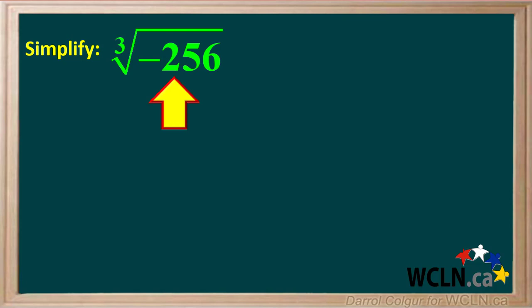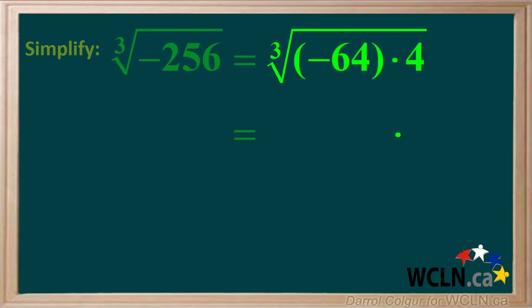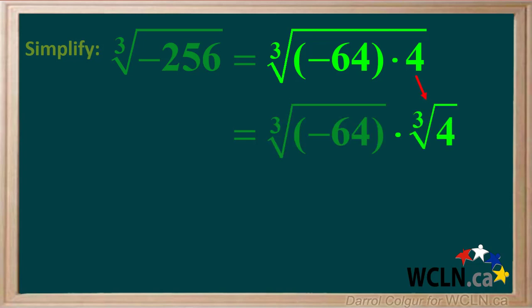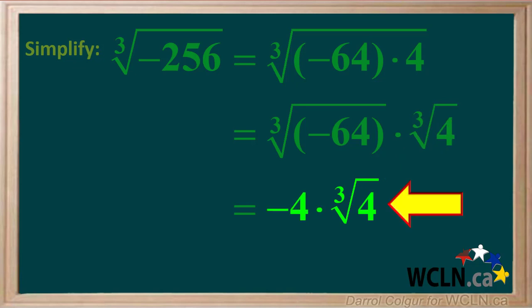We'll do one more example. You're asked to simplify the cube root of negative 256. Remember, you can take the cube root of a negative number. Negative 256 can be factored to negative 64 times 4. The cube root of negative 64 times 4 can be broken down to the cube root of negative 64 times the cube root of 4. Negative 64 is a perfect cube — the cube root of negative 64 is equal to negative 4. The cube root of 4 cannot be simplified, so just write it down.